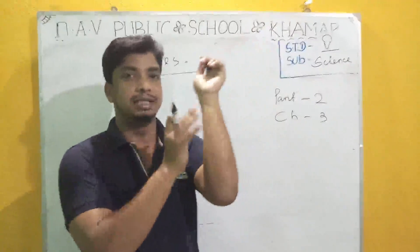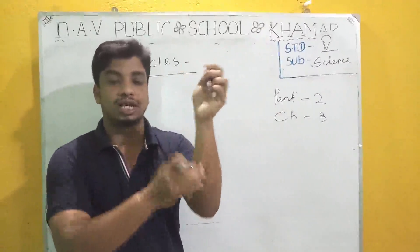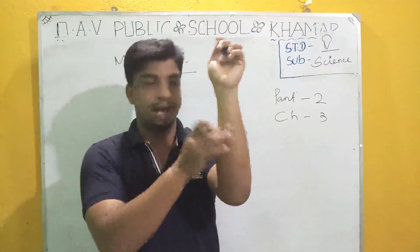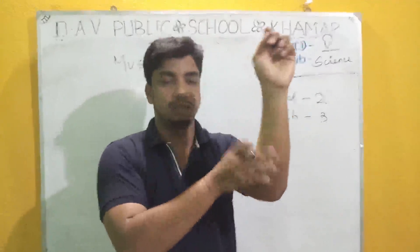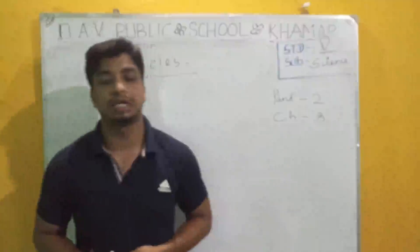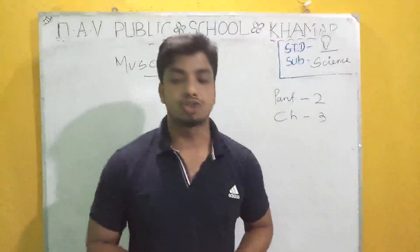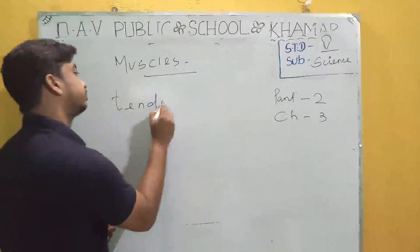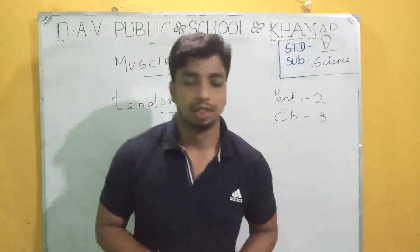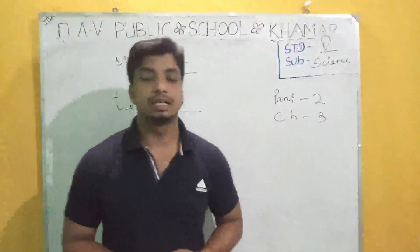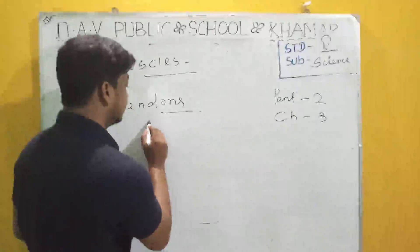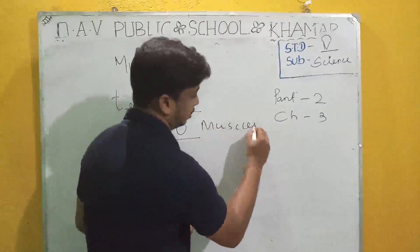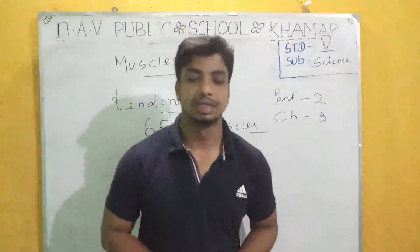These are the muscles. They are made of strong elastic tissue which are connected to the bones. These are connected to the bones by strong fiber called tendons. There are about 650 muscles in our body.